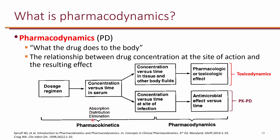There will be absorption, distribution, and elimination — these are the pharmacokinetic properties. Then there will be concentration in the body fluids and at the site of infection. At the site of infection is when you want the drug to act on the pathogens — that will be the pharmacodynamic outcomes, referred to as PKPD. Things that antibiotics do to the body are referred to as toxicodynamics, which we don't want.